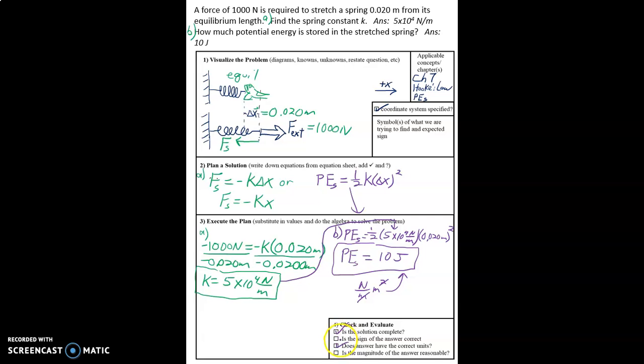We did answer both parts. The sign of the answers, are they correct? We forgot to put that in. So we were trying to find K. K is a spring constant. It is a scalar, so it's always positive. And it should have units of newtons per meter. And then potential energy is always positive, and it has units of joules. So sorry about that. We really should have done that at the beginning. We did get the correct signs.